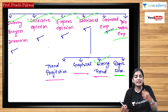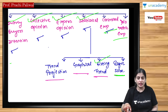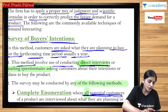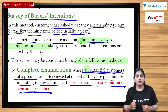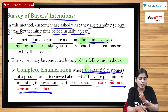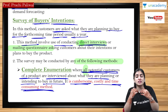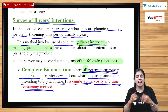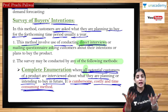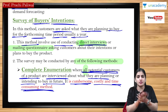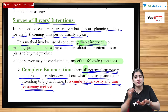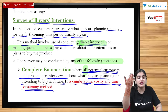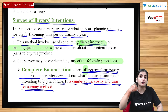We will first revise what we studied in the last lecture and then proceed further. The first method was survey of buyer intention. As the name suggests, here we do a survey of buyers — what the buyers are planning to buy in the future. We use a questionnaire with buyers to ask what they are planning to buy, and from that we estimate the future demand for a product.